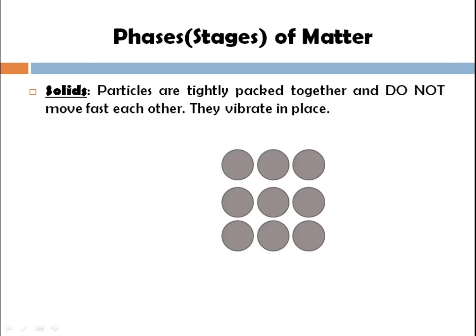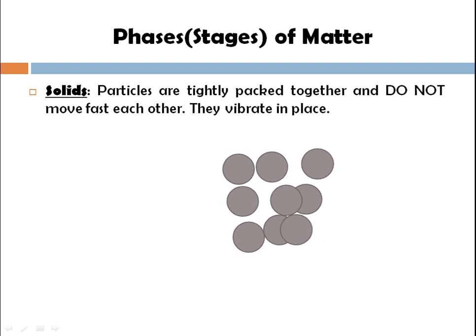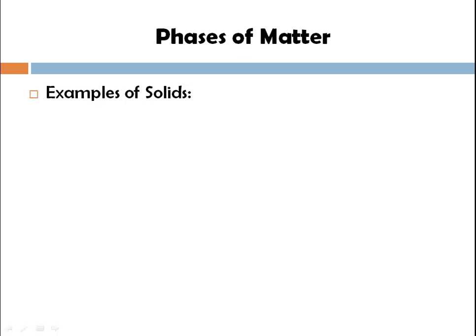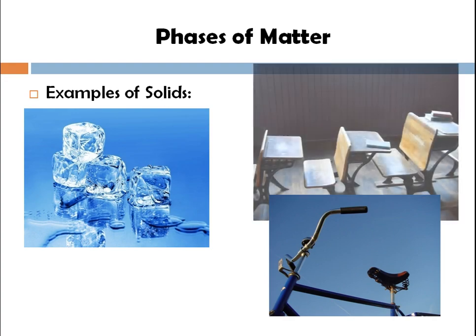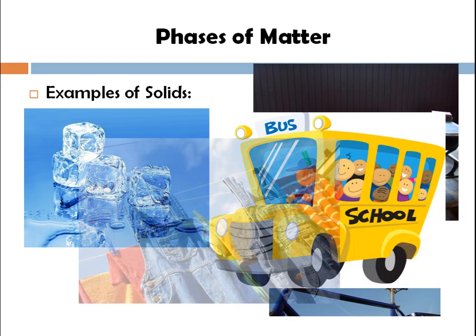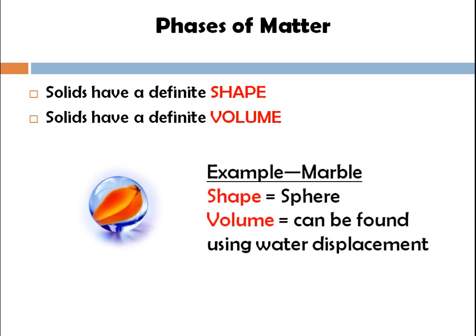In a solid, particles are tightly packed together and do not move past each other. They vibrate within a fixed area — they just vibrate and cannot move past each other. As you can see in this diagram, within that square only vibration of the molecules is present. Examples of solids include ice and a bicycle. Solids have a definite shape and volume.